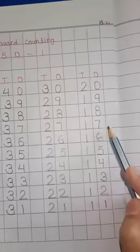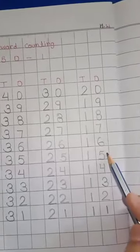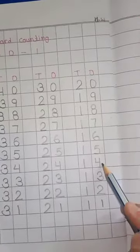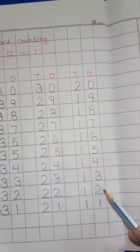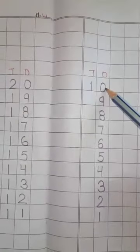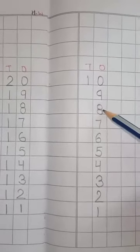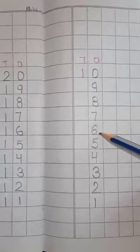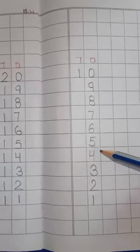18, 17, 16, 15, 14, 13, 12, 11. The next is 10, 9, 8, 7, 6, 5, 4.